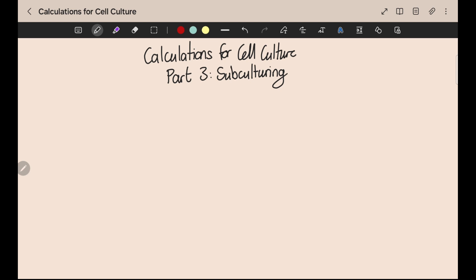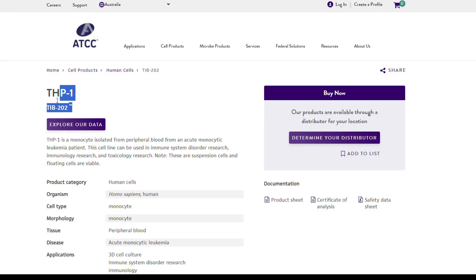It's important to remember that different cell types require different conditions. That includes media but also cell concentration. The best thing you can do is look at the manufacturer page for your cell type. Here is an example from the ATCC for a common cell line.